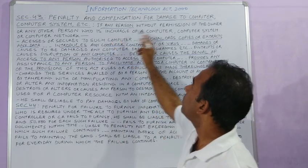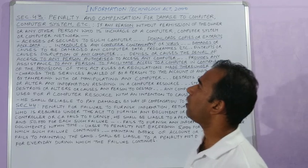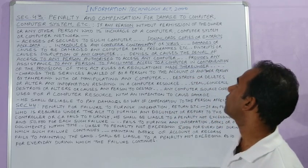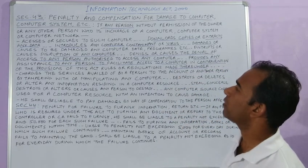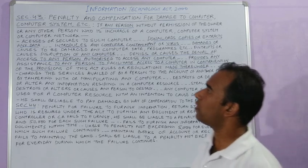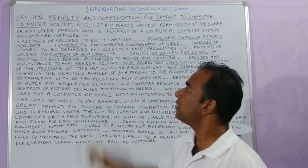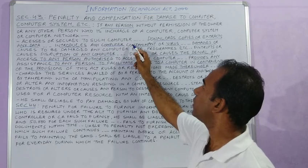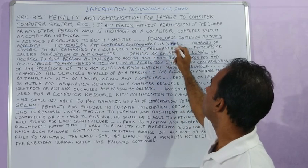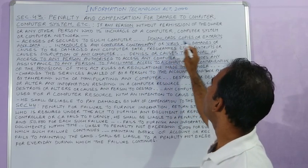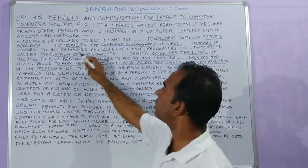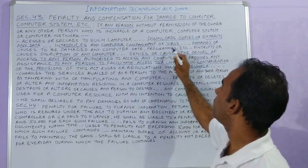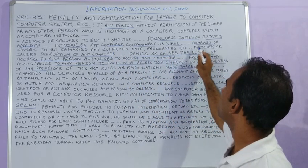If any person without permission of the owner, or any other person who is in charge of a computer system or computer network, accesses or secures access to such computer, or downloads, copies or extracts any data, or introduces any computer contaminant or virus —